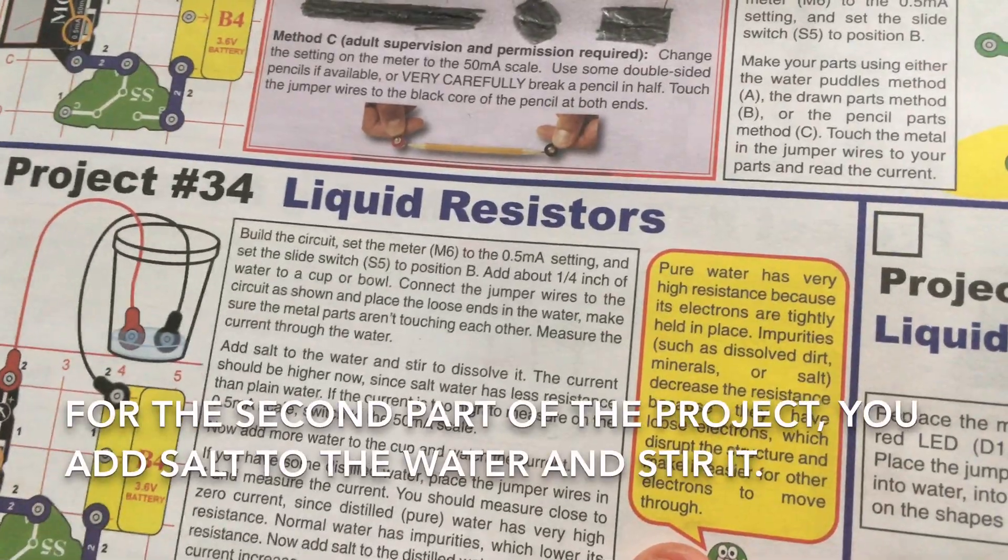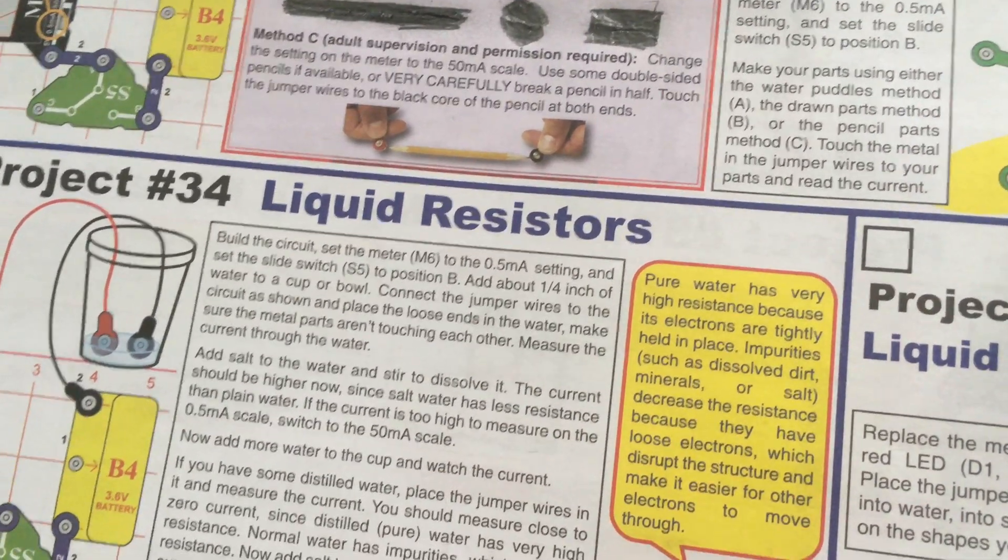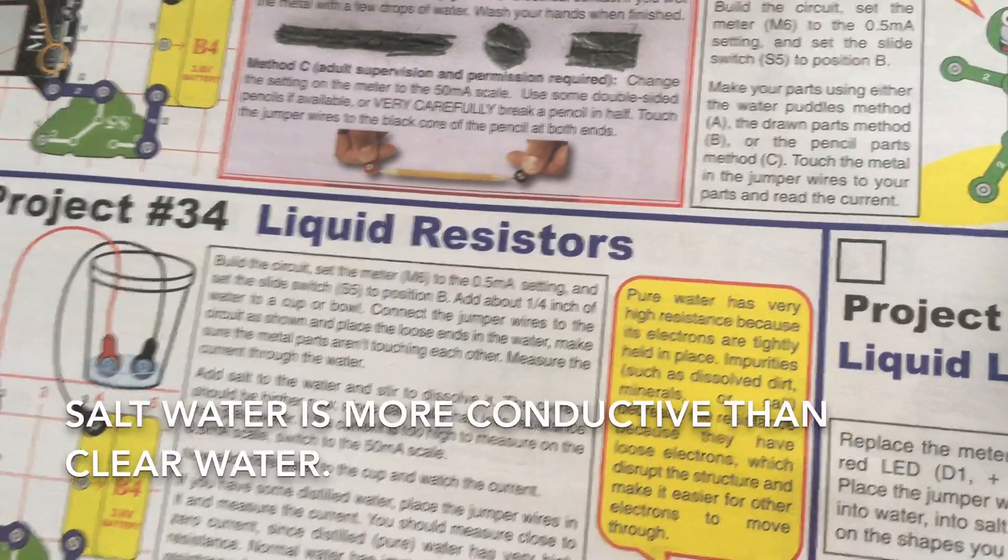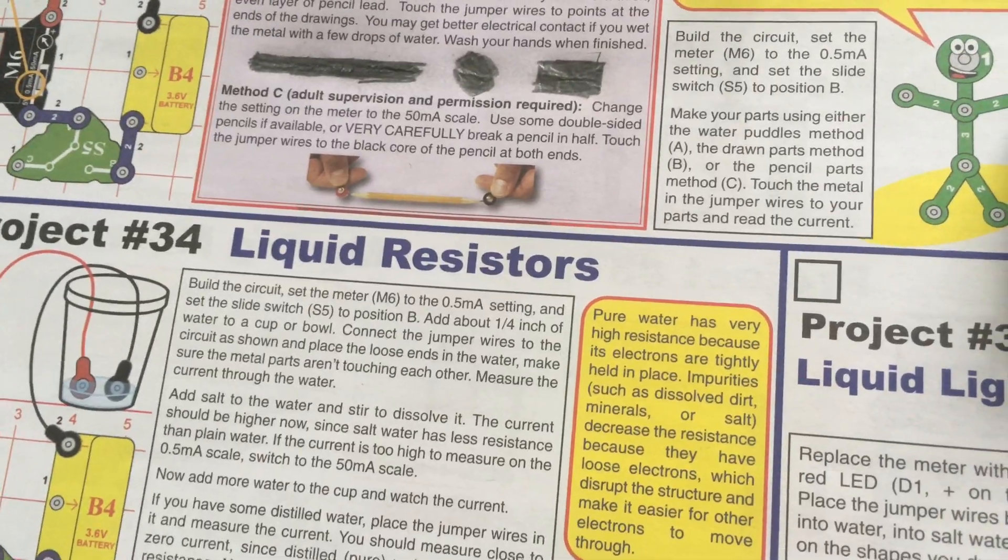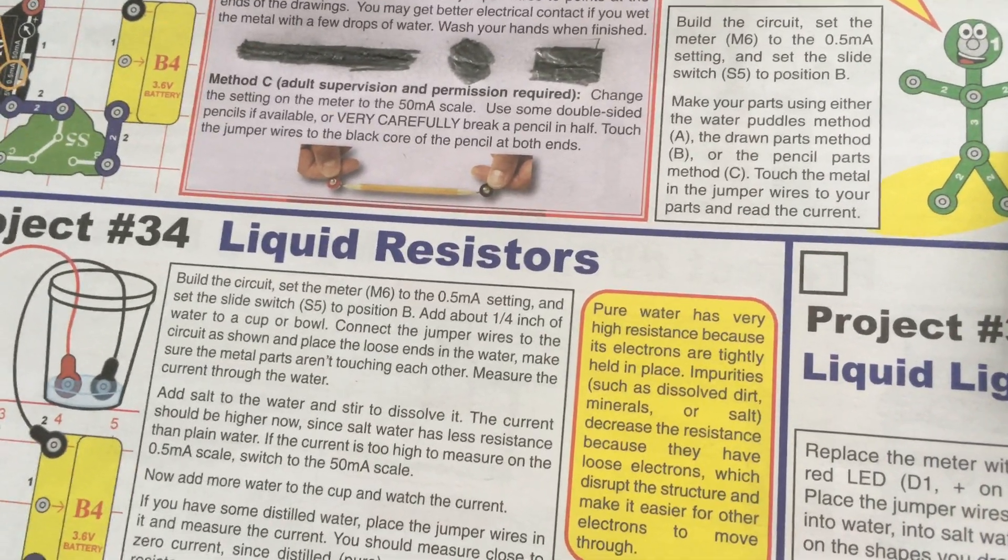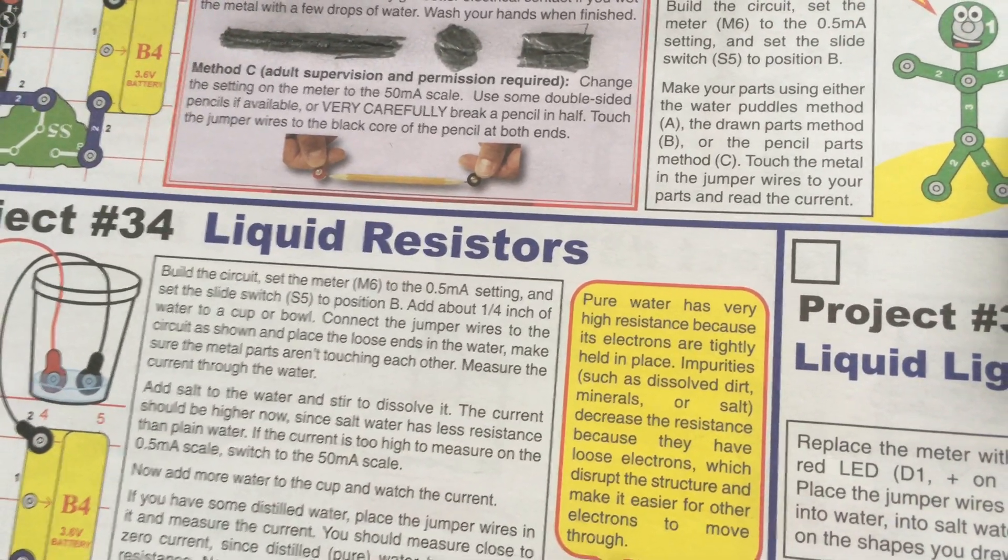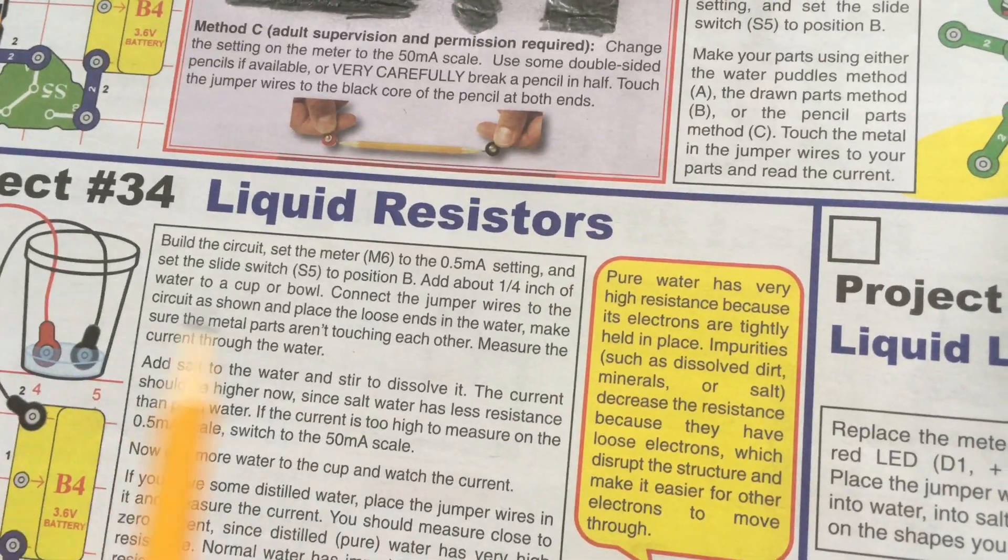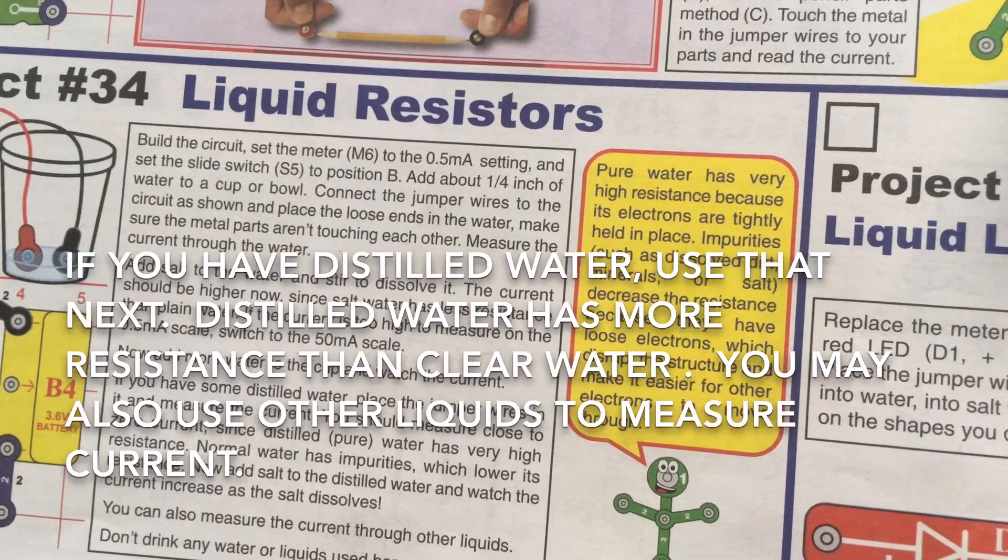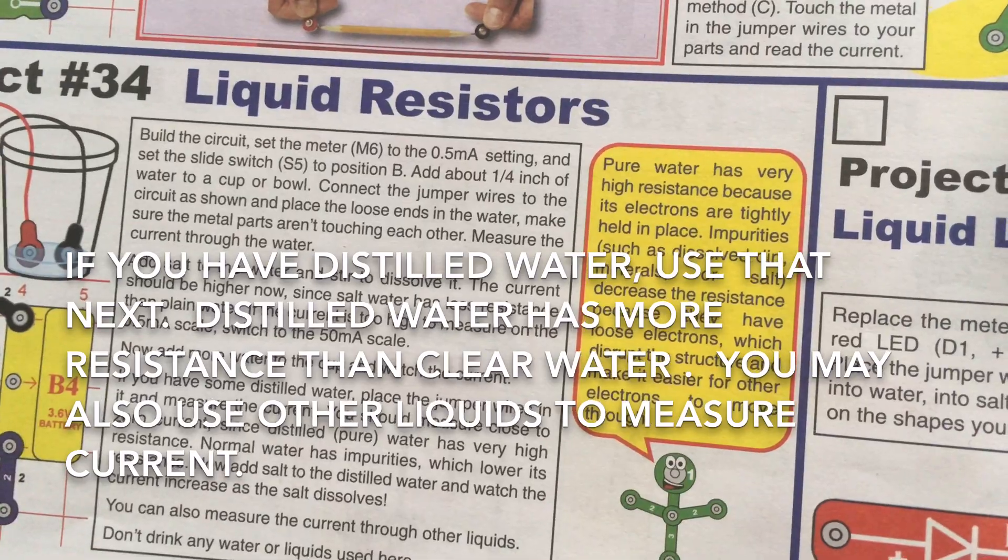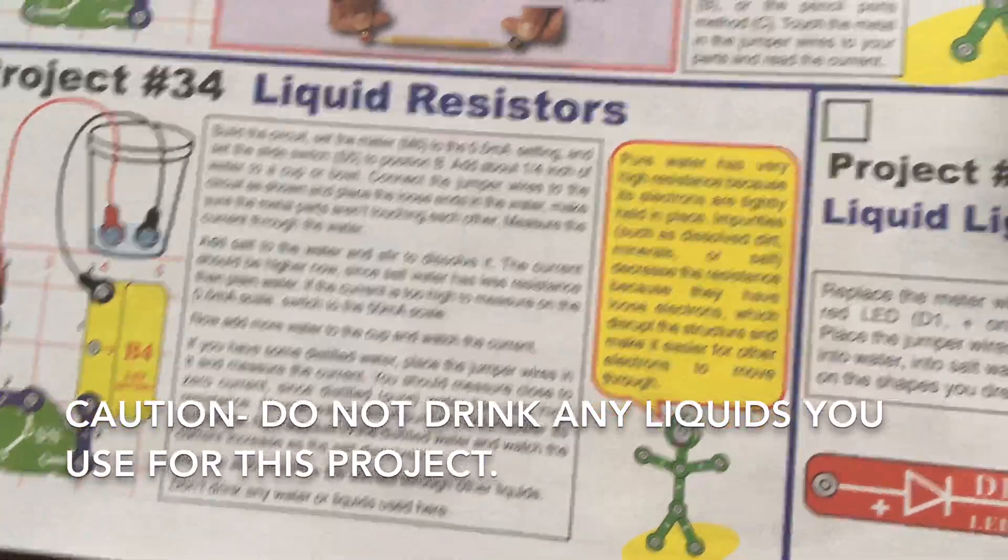For the second part of the project, you add salt to the water and stir and dissolve it. The current would be even higher because salt water has less resistance than clear water. If the current is too high to register, then switch the meter to the 50 milliamp setting. You can add more water to the cup and watch the current. If you have some distilled water, place the jumper wires in and measure the current. Distilled water has very high resistance. You can also try other liquids, but don't drink any of them.